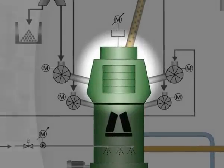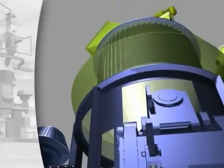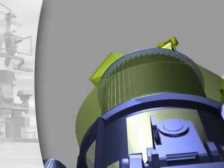A classifier, a type LS-KS dynamic classifier, is installed on top of the mill. A static guide vein ring surrounds the caged rotor inside.